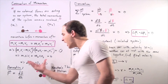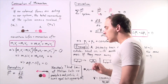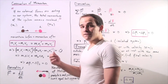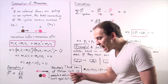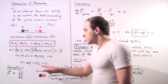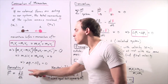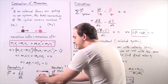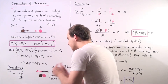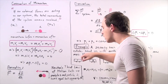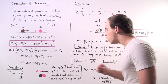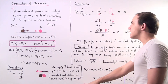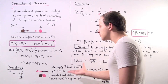Now let's derive this law from Newton's second law of motion. Recall that Newton's second law states that the net force acting on an object equals mass times acceleration, which equals the derivative of momentum with respect to time. When our two particles collide, Newton's third law of motion tells us that particle one and particle two exert equal but opposite forces on one another.